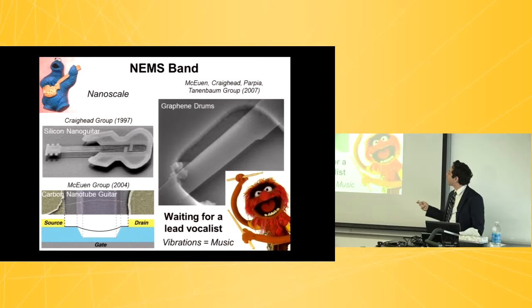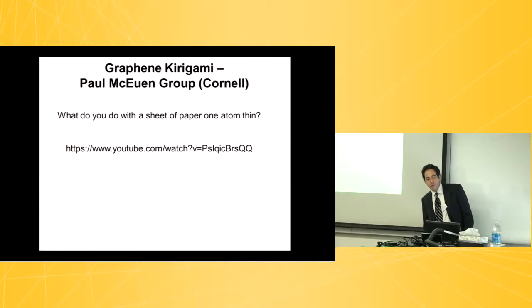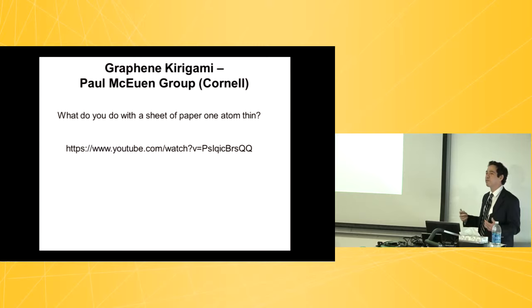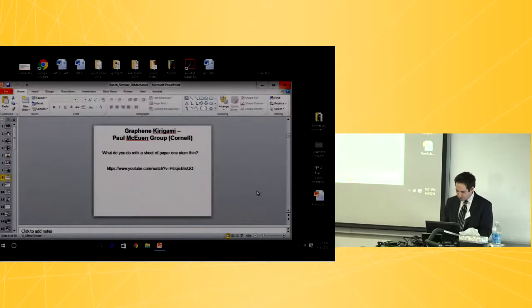Some other highlights about mechanical stuff that I find very interesting recently. Here's some work out of my former PhD advisor's group, Paul McEwen at Cornell, where they're asking this question, what do you do with a sheet of paper one atom thin? So they decided to follow the Japanese art of kirigami. I'm going to show you a video of what they did with this material.